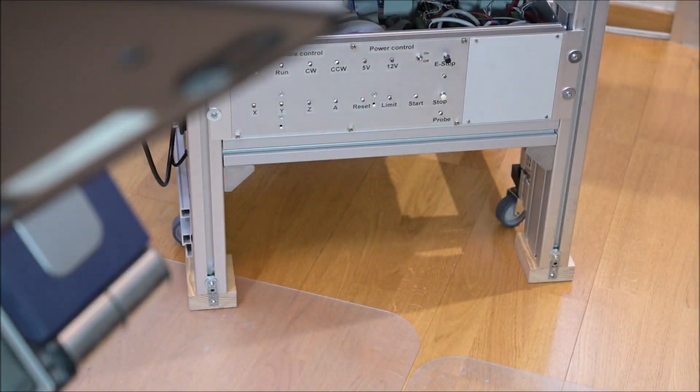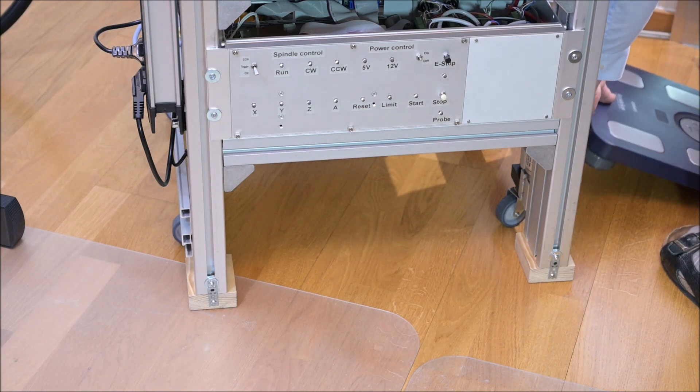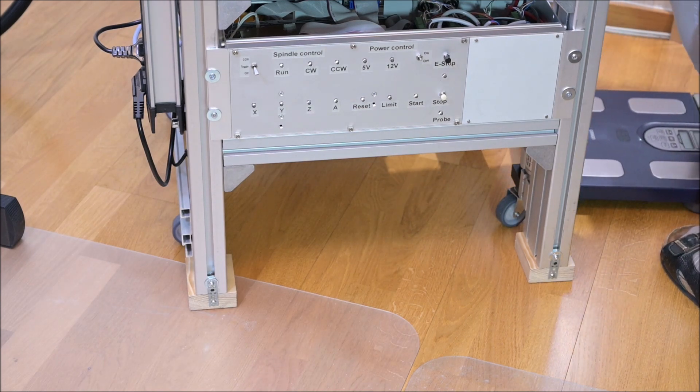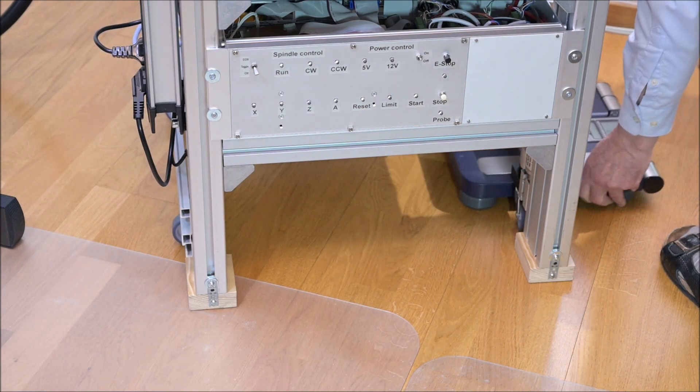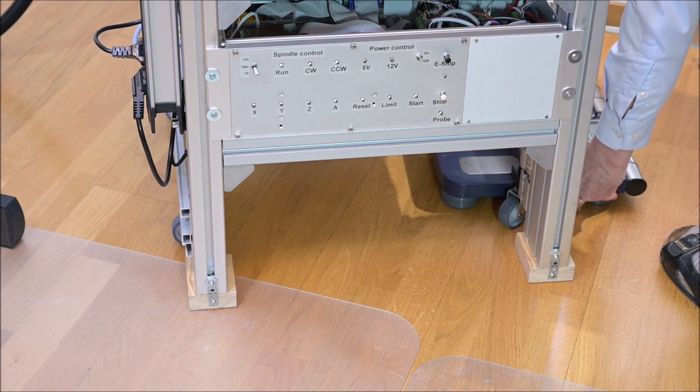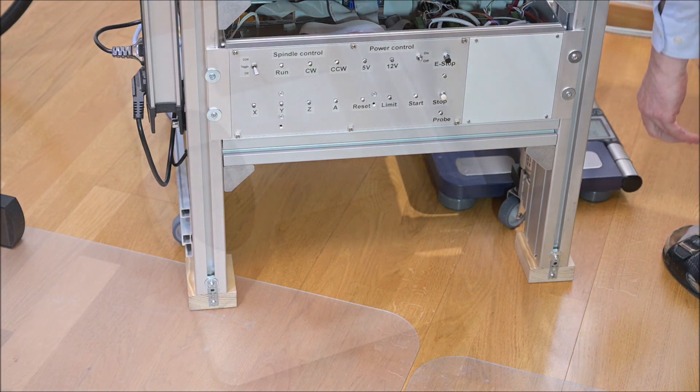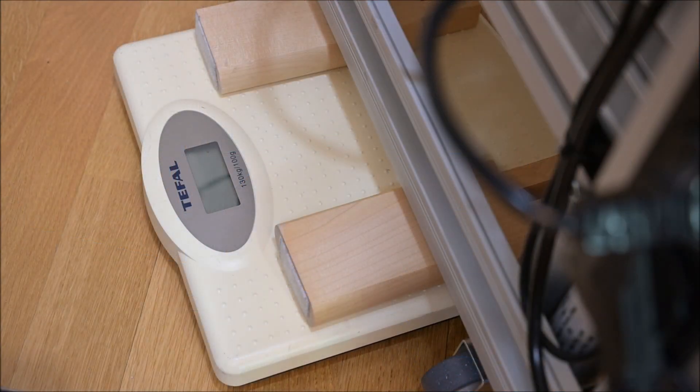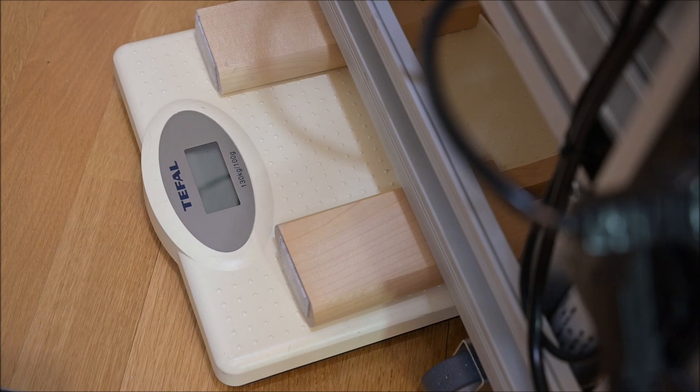I will use two ordinary bathroom scales. Each one of them can handle the weight of my machine, but I will be using two because it's safer to have one under each side of the machine than having just one in the center, which could easily get out of balance.